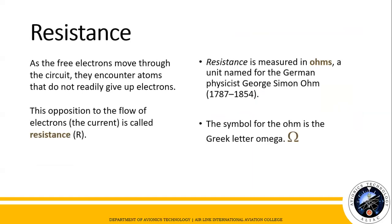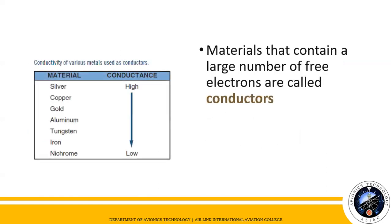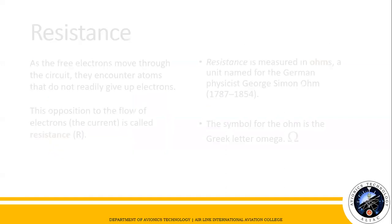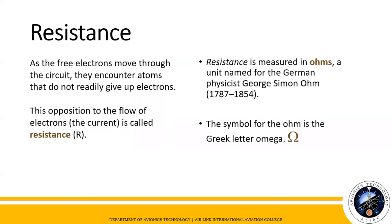Now we have resistance. Every material offers some resistance, or opposition, to current flow. The degree of resistance of a material depends on its size, shape, and temperature. Materials with low resistance are called conductors. Conductors with many free electrons offer little resistance to current flow. Examples of conductors include silver, copper, gold, aluminum, and iron.